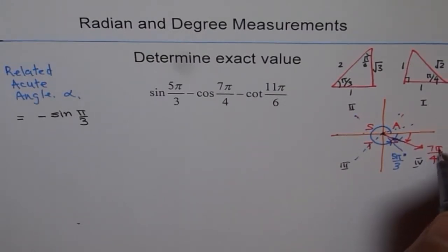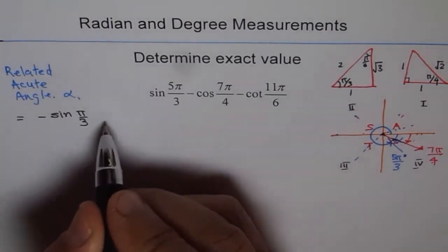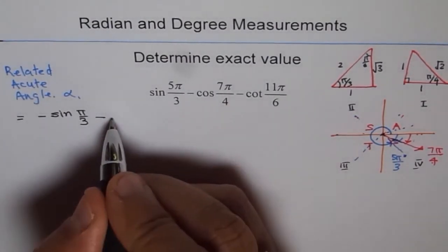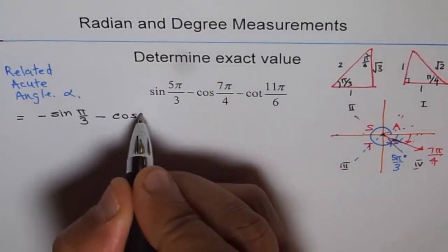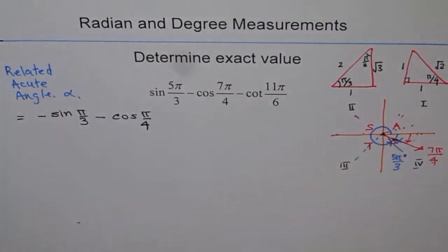So acute angle here is π/4 because 7 is there, 8th one will give me the angle with the horizontal. Since cos is positive here, we will treat it as positive. But it's already negative in this place, so that negative sign remains and we get cos of π/4.